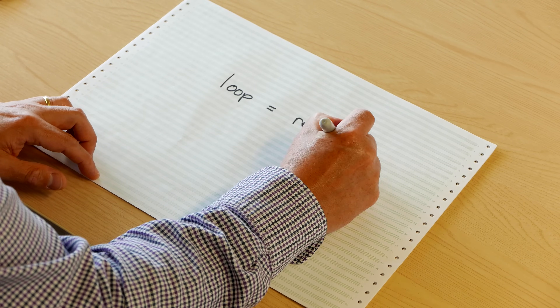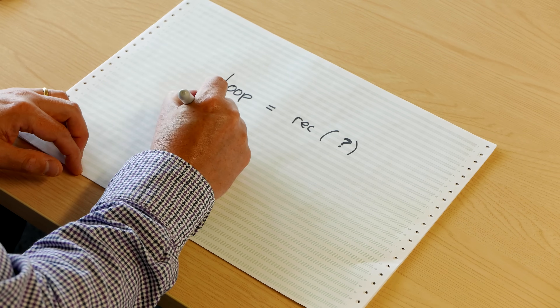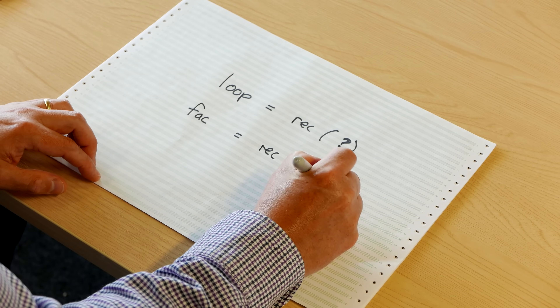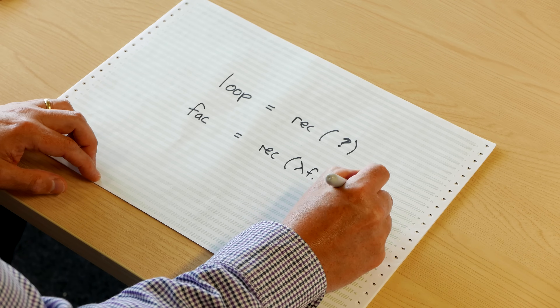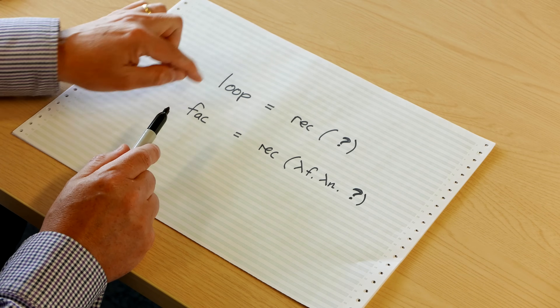Let me set you a couple of exercises. Using the definition of rec, how do you program loop? Define loop to be rec of some function — figure out what function to pass to rec, and it's actually the simplest function you could write down in the lambda calculus. A slightly more challenging exercise is how to define the factorial function using rec. You pass it lambda f, lambda n, and figure out what goes in for the question mark. The function you write there will be the non-recursive part of factorial.